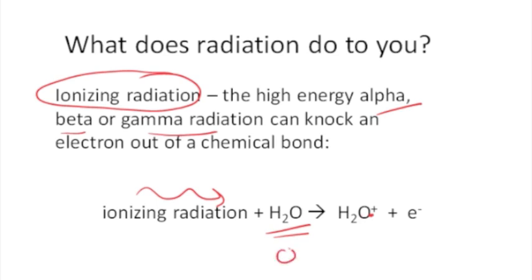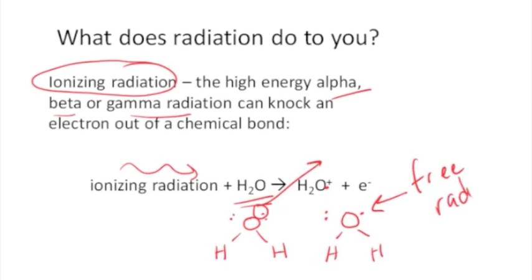You may not remember, we'll talk more about this later, what water really looks like, a model of water. And there's two pairs of electrons on the oxygen. So what happens is the ionizing radiation can knock one of these off, leaving the water molecule looking like this, which is just one electron instead of two, and that just one unpaired electron is called a free radical, and it's very reactive.